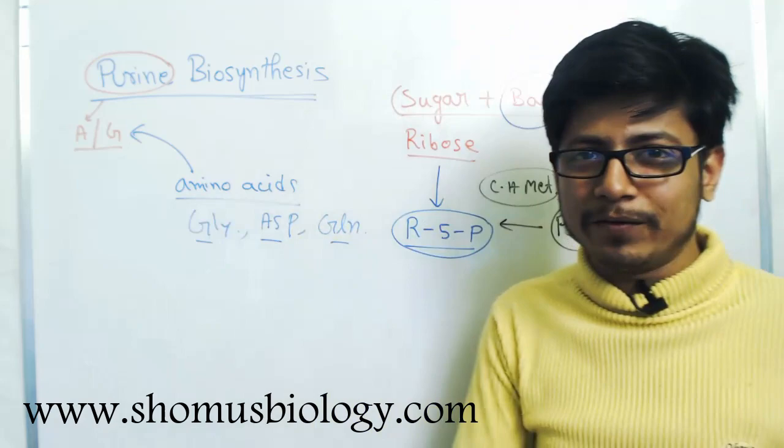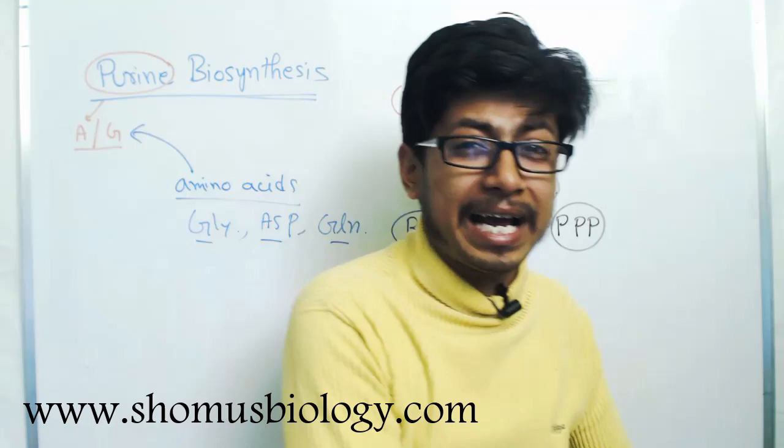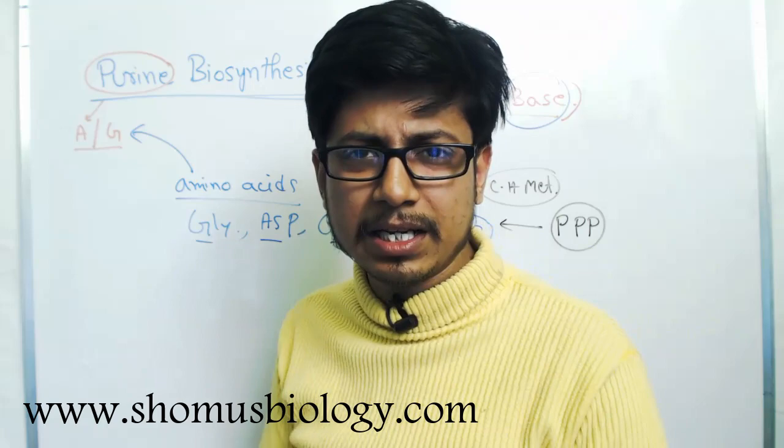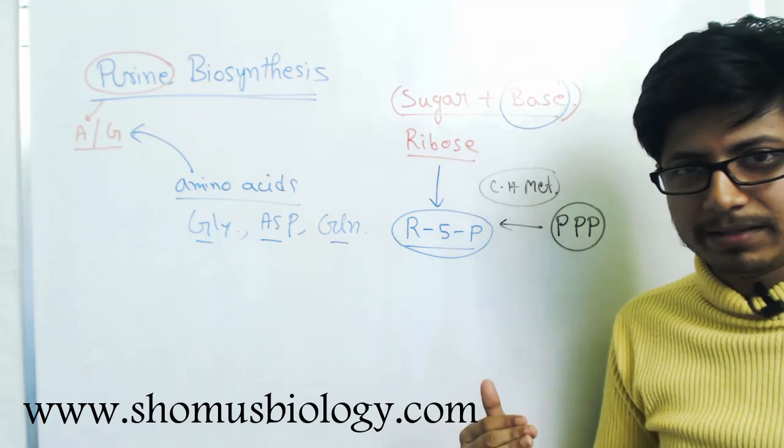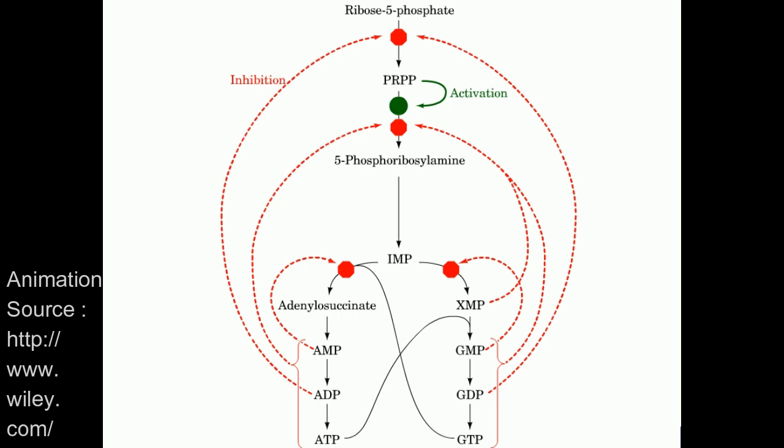One of the most important enzymes involved is PRPP, involved in the process of purine and pyrimidine biosynthesis. What is PRPP and how exactly the whole process of purine and pyrimidine nucleotide synthesis works will be covered in the second part of the video — an animation showing how each stage is catalyzed by enzymes to yield our final product.